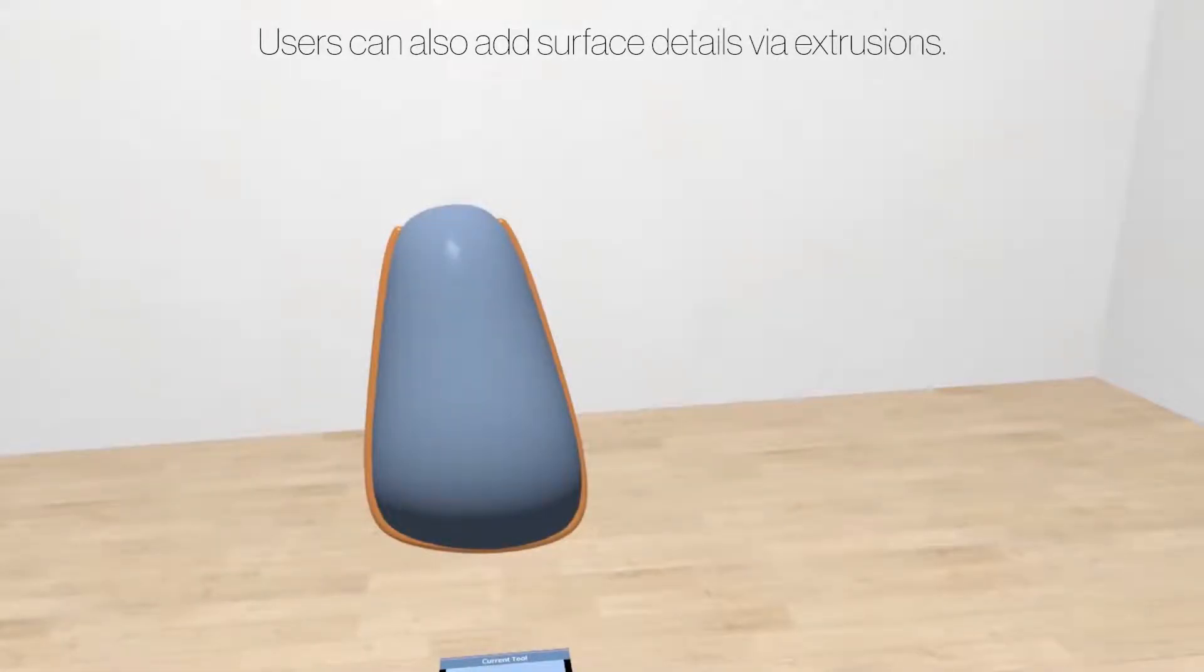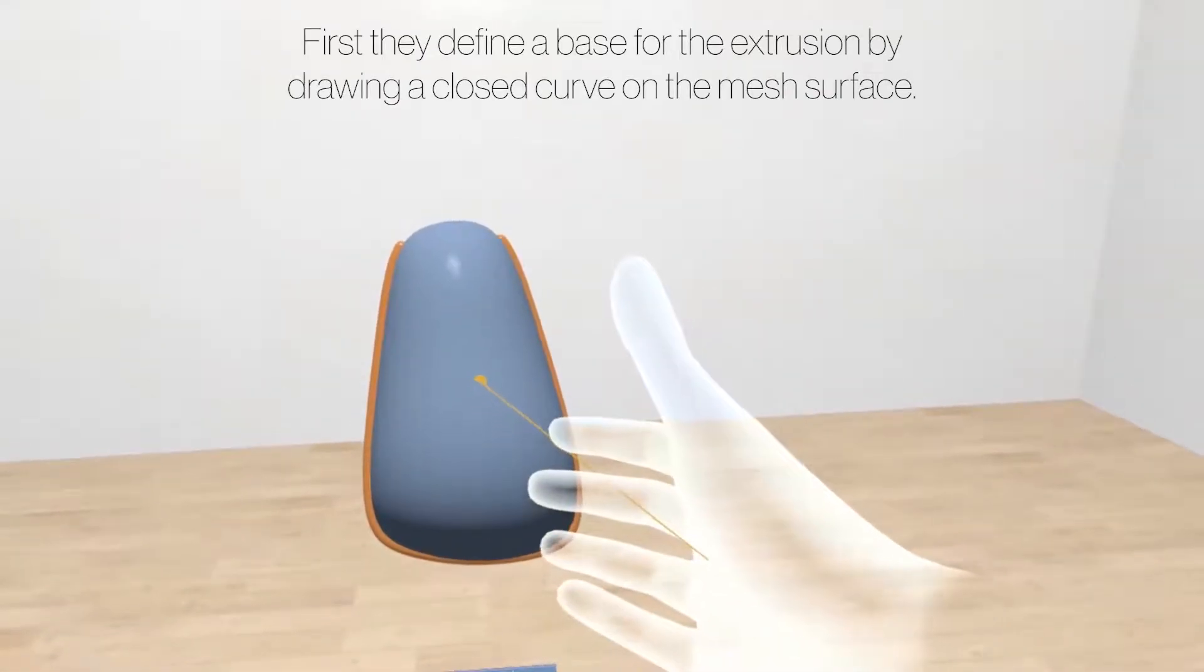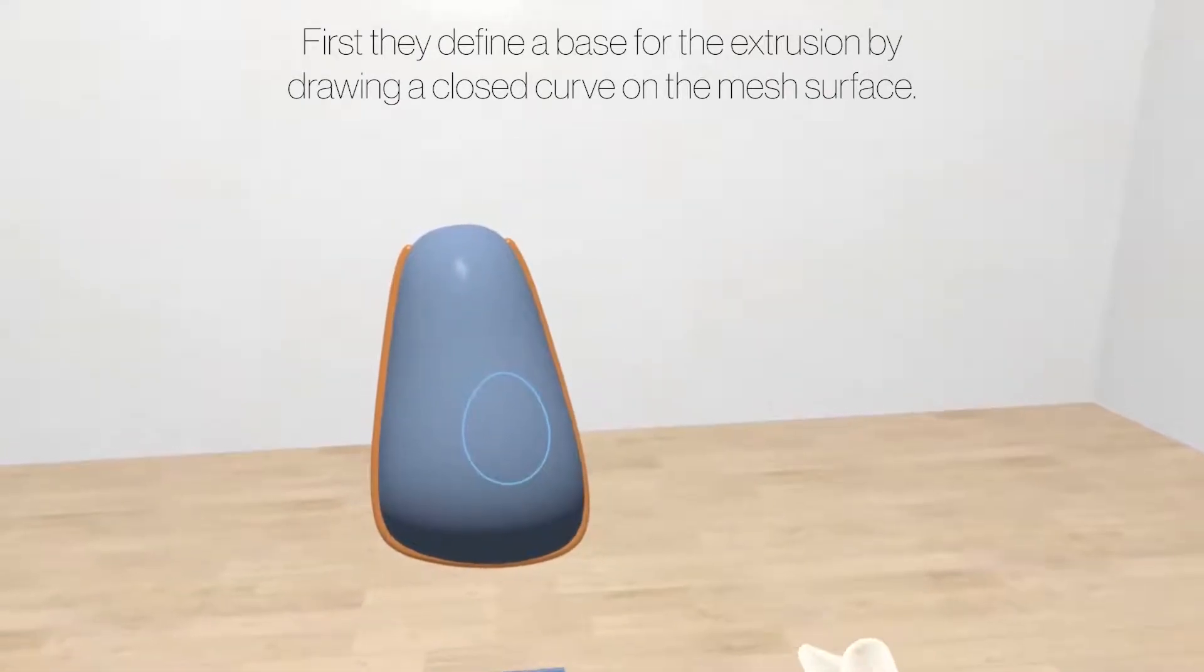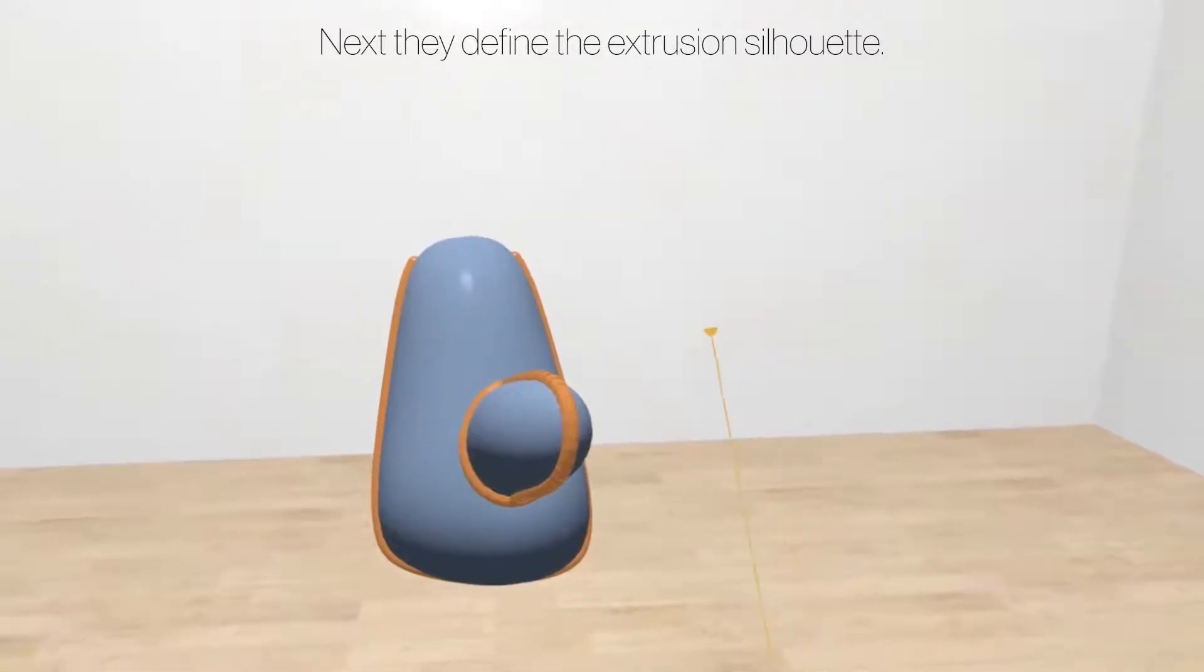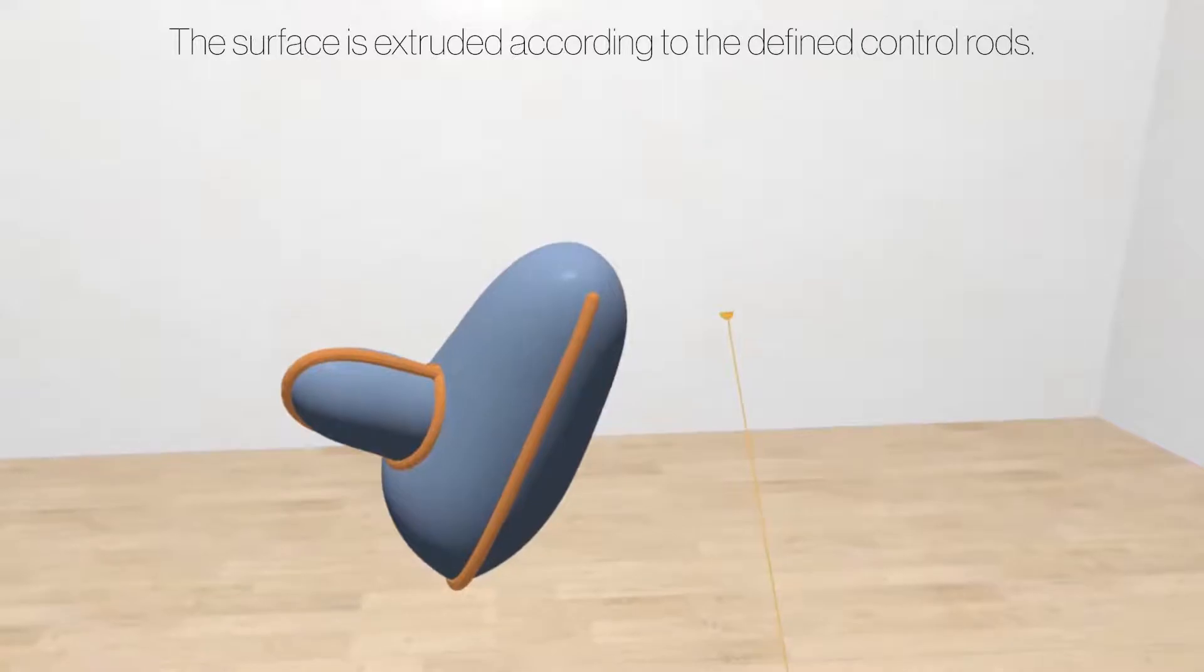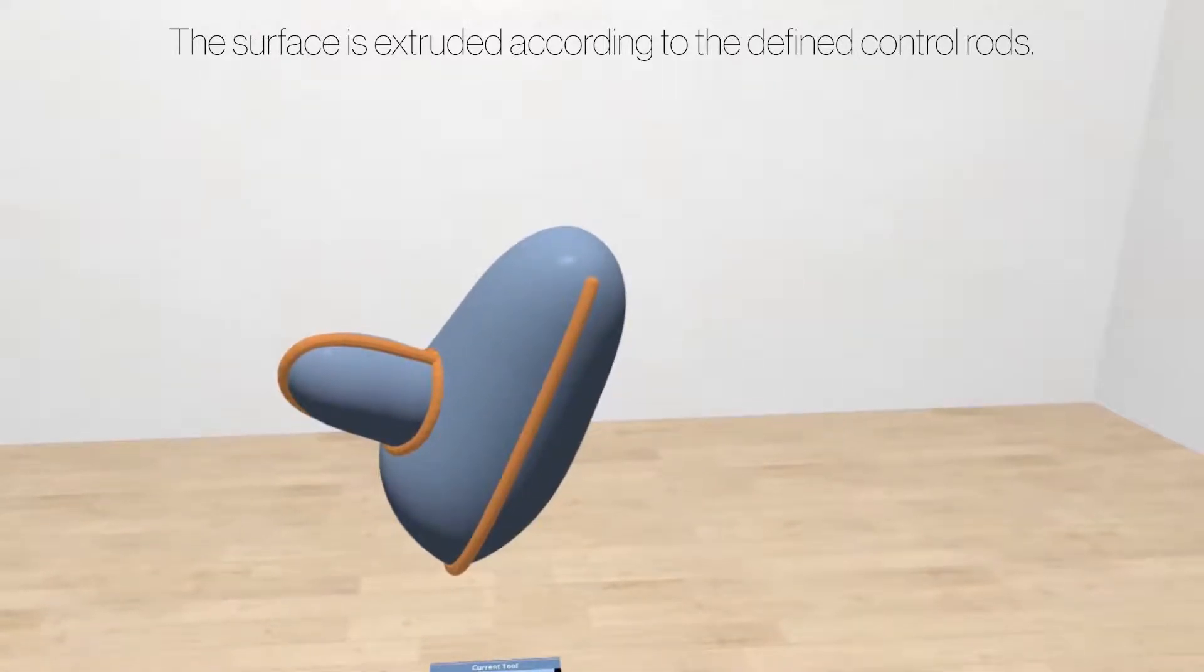Users can also add surface details via extrusions. First, they define a base for the extrusion by drawing a closed curve on the mesh surface. Next, they define the extrusion silhouette. The surface is extruded according to the defined control rods.